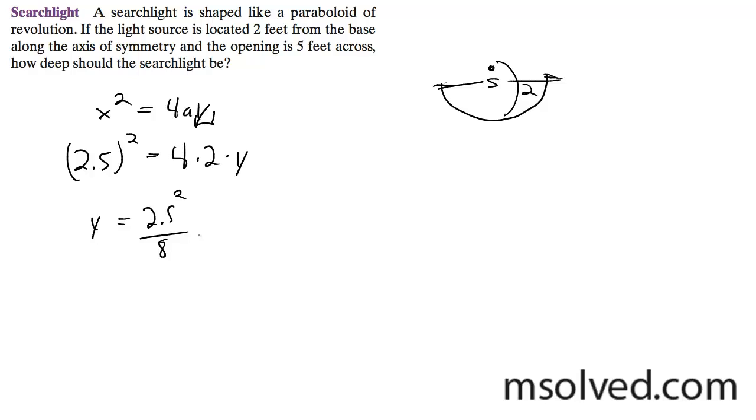Y is going to be equal to 2.5 squared divided by 8, which is equal to 6.25 divided by 8. The height of this paraboloid is 0.78125 feet. This is our solution.